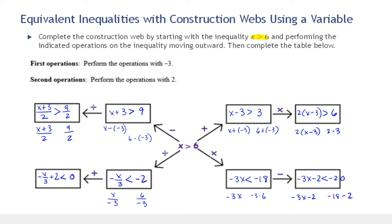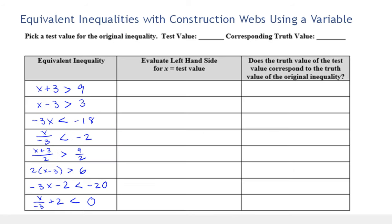When we worked with equations, we plugged our value for x back in to check that the equation was true and that the equations were equivalent. With inequalities, remember there are infinitely many solutions, so instead we're just going to pick a test value. It's always good to pick a test value for an inequality to check your work. Unlike with an equation, it doesn't guarantee your work, but the most likely error you'll make is not reversing the sign, and this will help catch that.